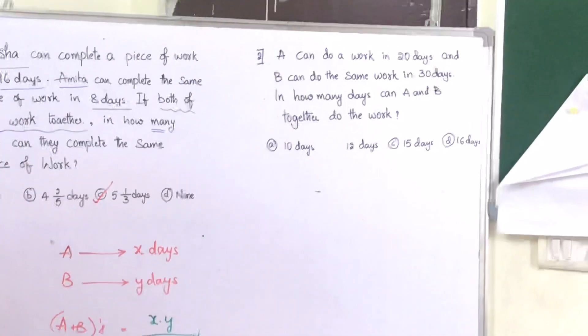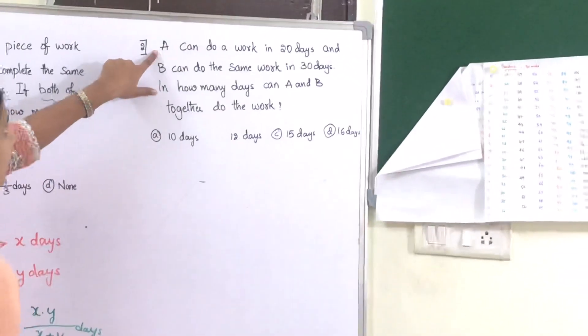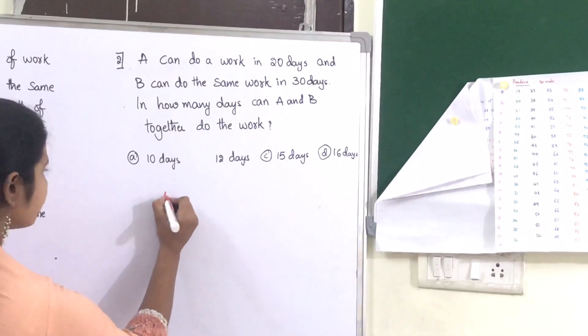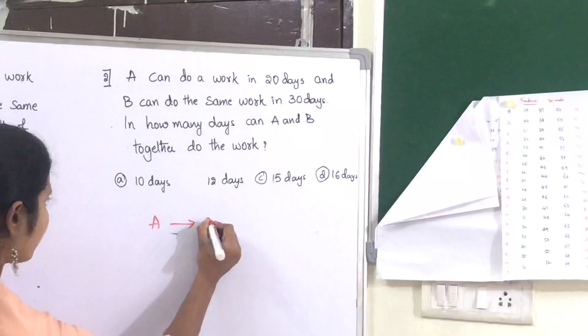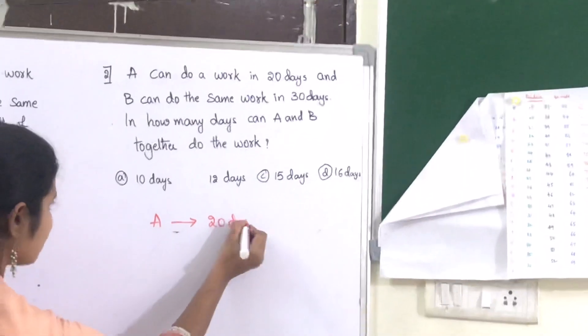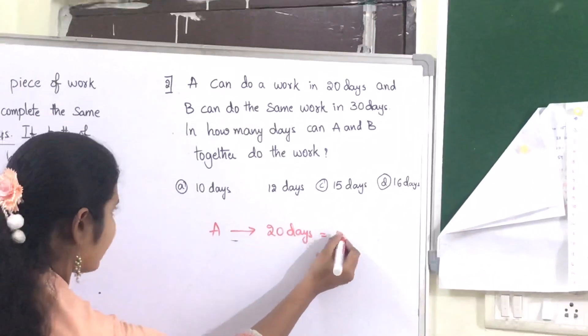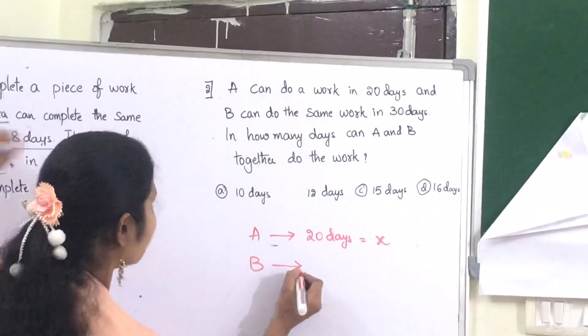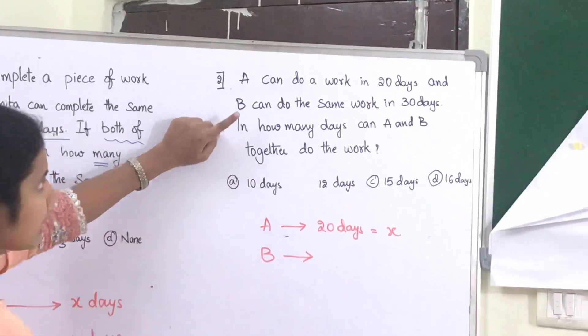Let us see another question based upon this concept. A can do work in 20 days. This 20 days is the value of X which we discussed earlier.